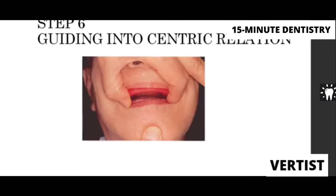The easiest technique usually followed is to ask the patient to take the tongue up and back and touch the posterior part of the palate. When this happens, the mandible goes back automatically into a retruded position, and you get the centric relation automatically. Instead of guiding the patient, ask the patient to touch the tongue on the posterior part of the palate and then close the jaw. Observe whether the patient closes in the same position repeatedly on their own — this confirms centric relation. It is very important to train the patient before actually recording the centric relation.